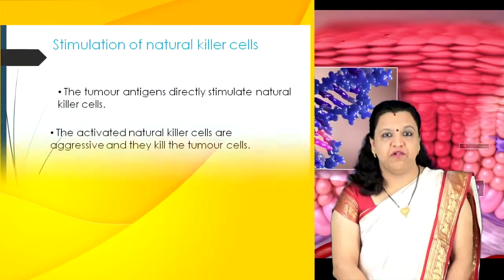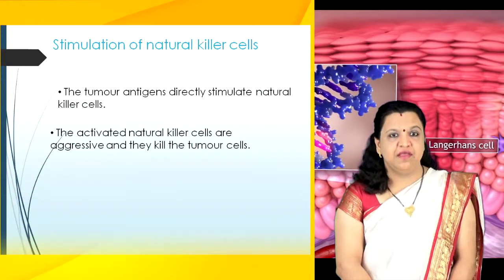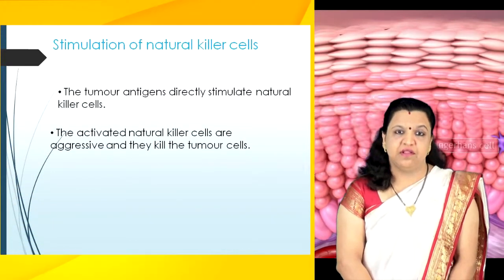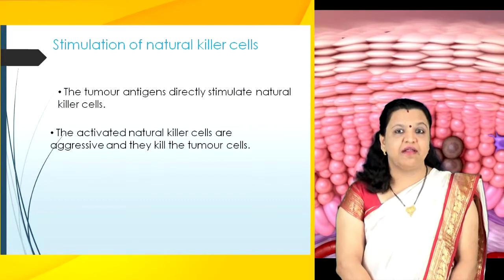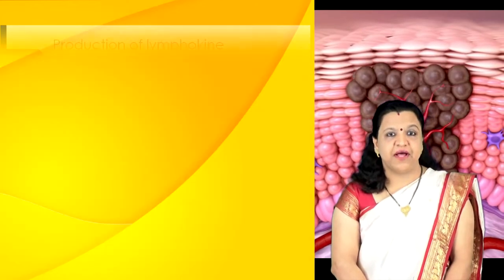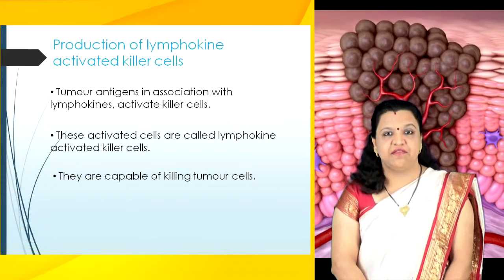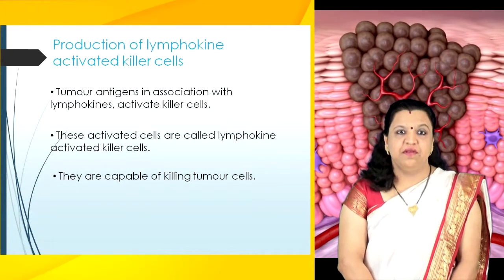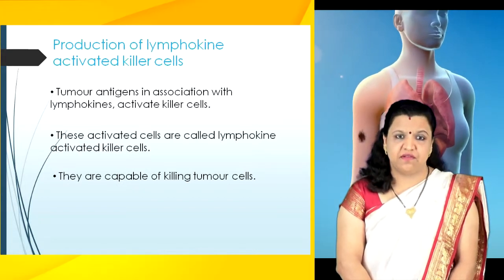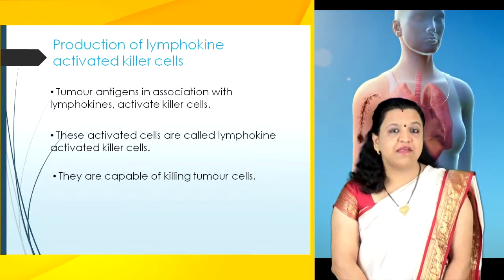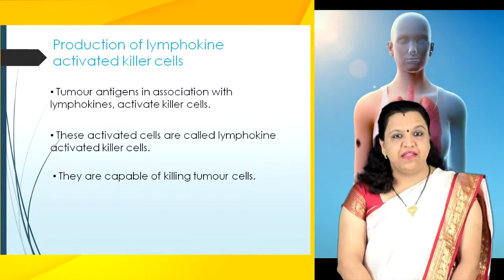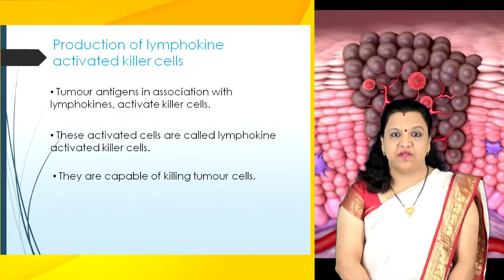Stimulation of natural killer cells also takes place. The tumor antigens directly stimulate the natural killer cells, and the activated natural killer cells are aggressive and kill the tumor cells. Additionally, tumor antigens in association with lymphokines can activate killer cells. These activated cells are called lymphokine activated killer cells and are capable of killing tumor cells.